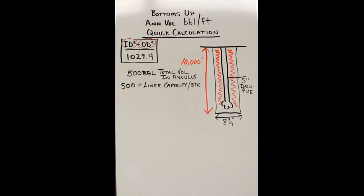So you got that 500 barrels, you got to take that liner capacity per stroke. In this case here it's 0.105, divide that by your 500 barrels, bada bing bada boom, 4,761 strokes and you got your bottoms up. Nice work everyone.